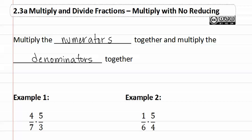So all you do is do four times five is twenty, and seven times three is twenty-one. And that is our answer.